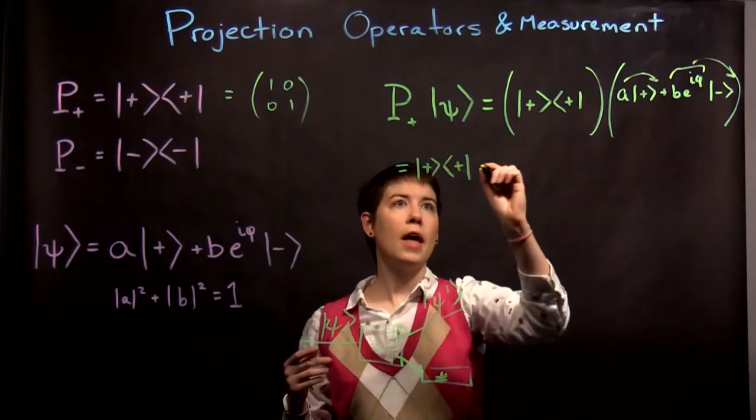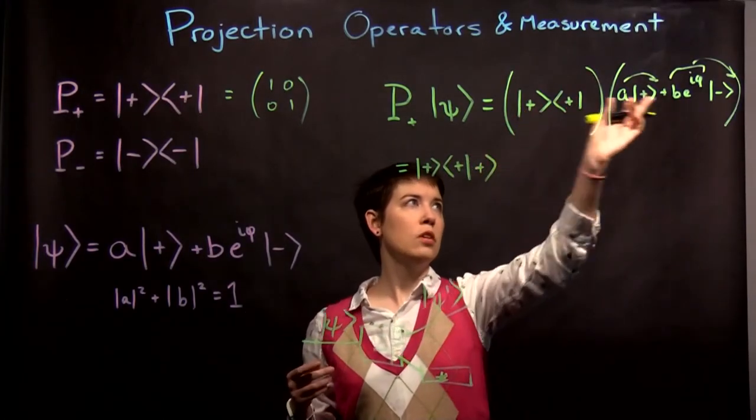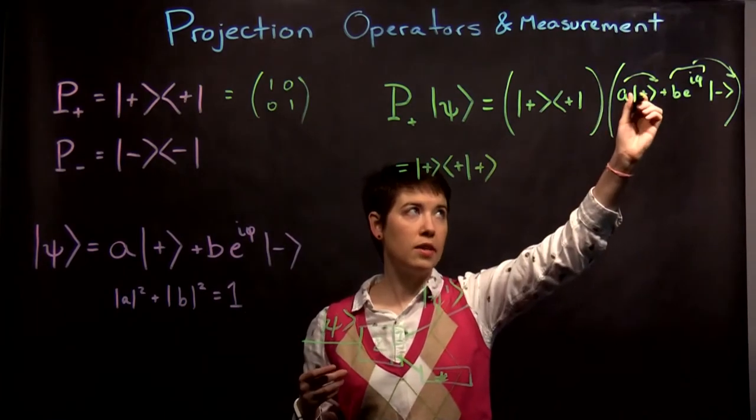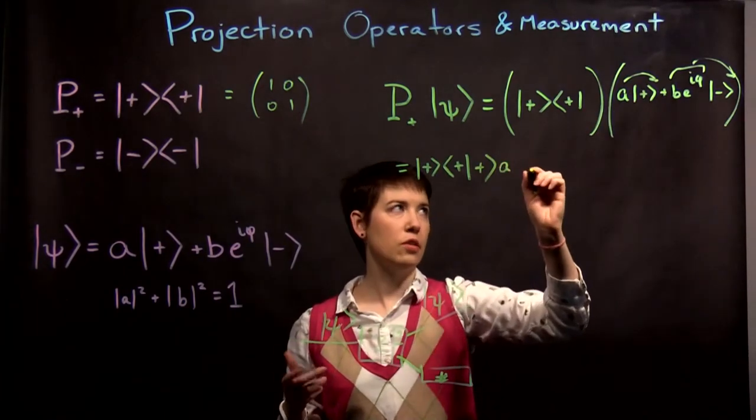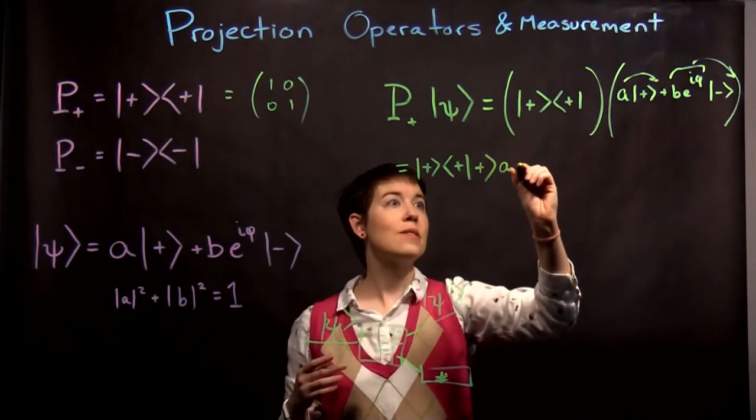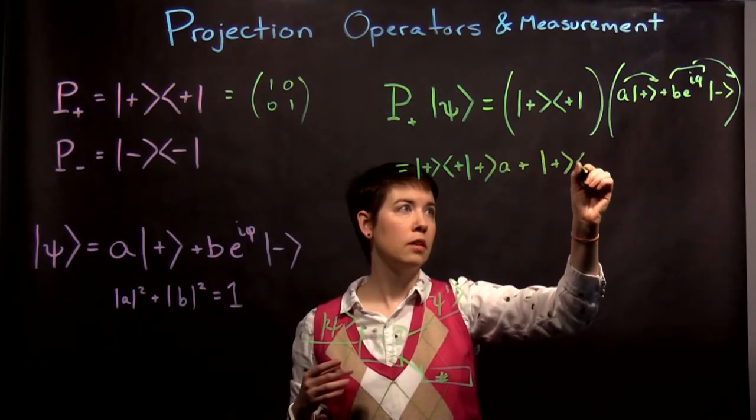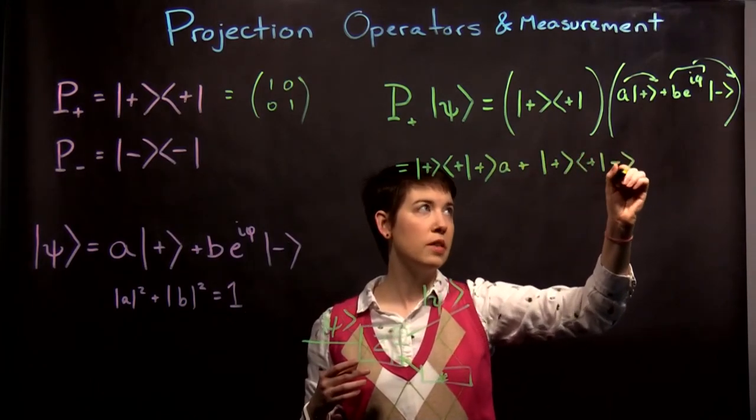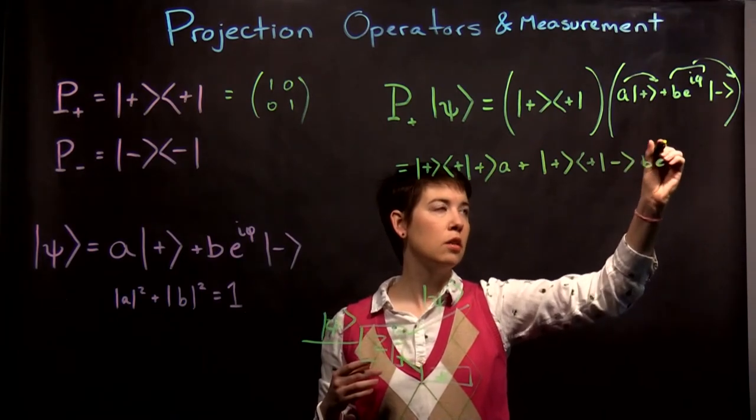My first object is spin up ket, and I can move these scalars over to the right. You could have moved them over to the left. But I have this object, and now I'm applying here. Now I have that spin up ket, and then a, just on the outside, to put it somewhere. My second object here is again spin up ket, spin up bra, spin down bra, b, e to the i phi.